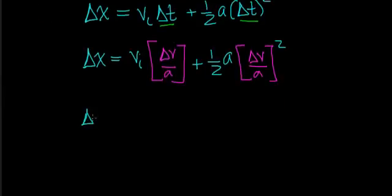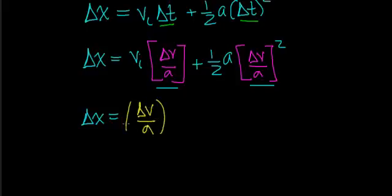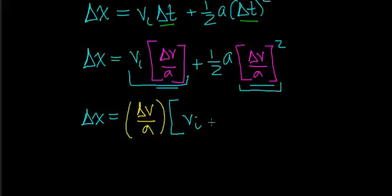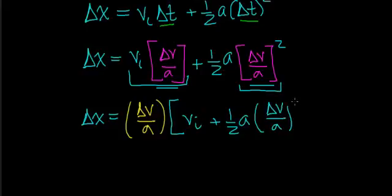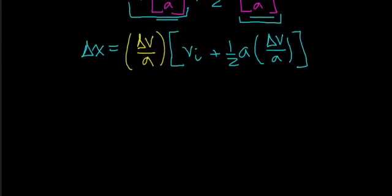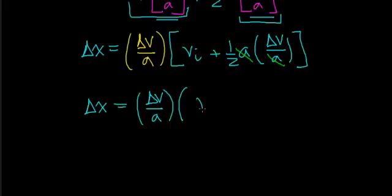The next step is to factor out one delta v over acceleration from each of these terms. When I do that, I get delta v over the acceleration times the quantity: v initial, plus — when I factor one of those terms out of the second product — one-half times the acceleration times delta v divided by the acceleration. I can then cancel the acceleration in that second term, and rewrite this as delta x equals delta v over the acceleration, times v initial plus one-half of delta v.